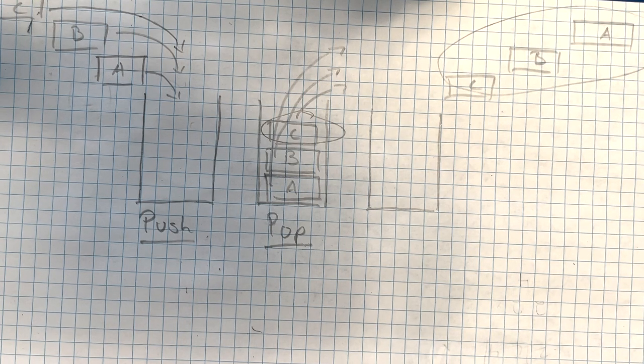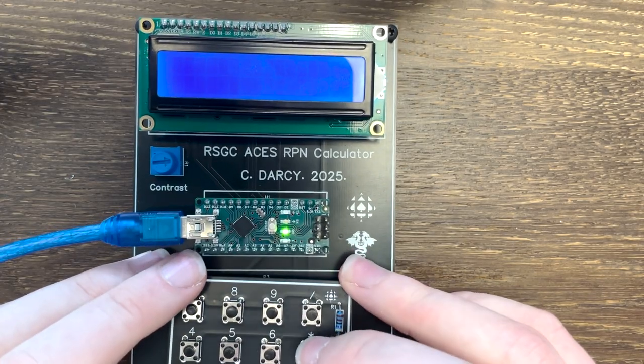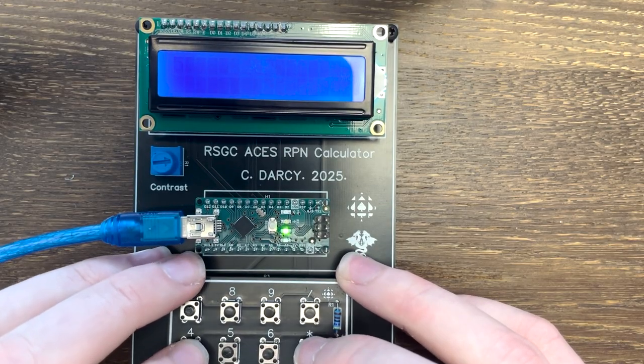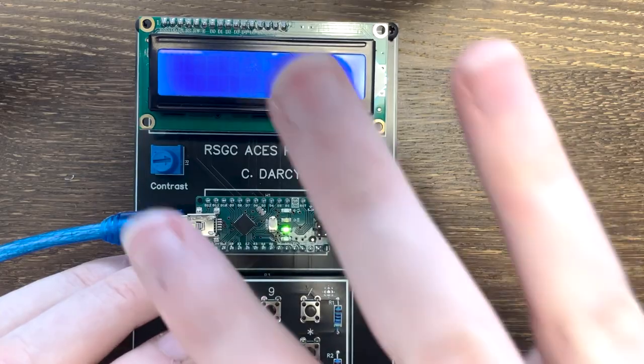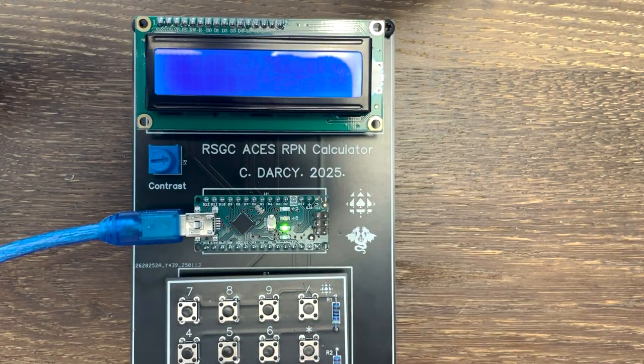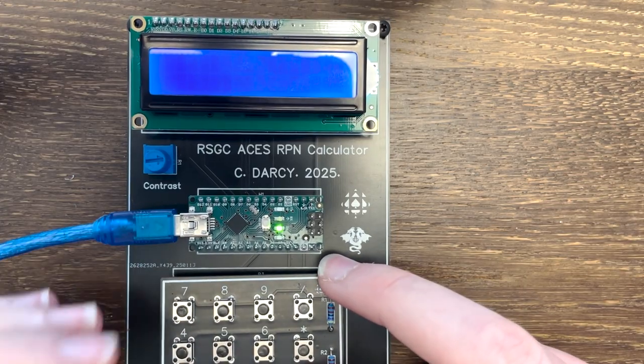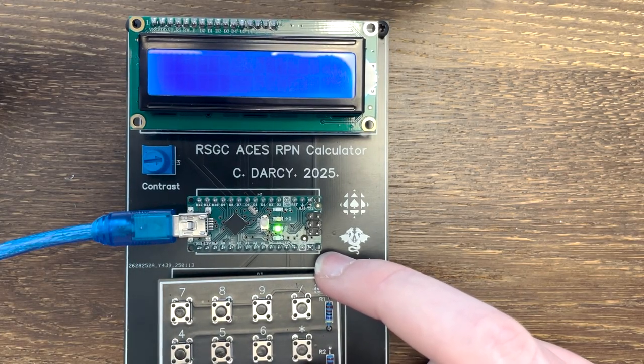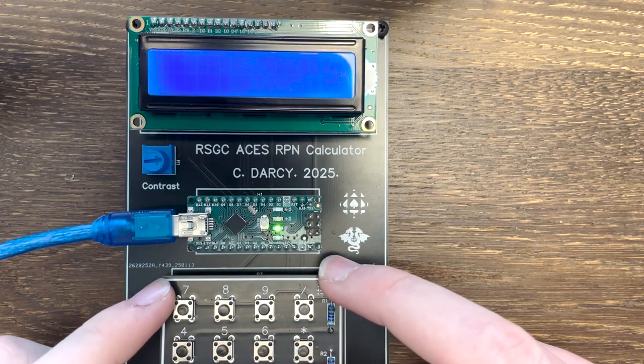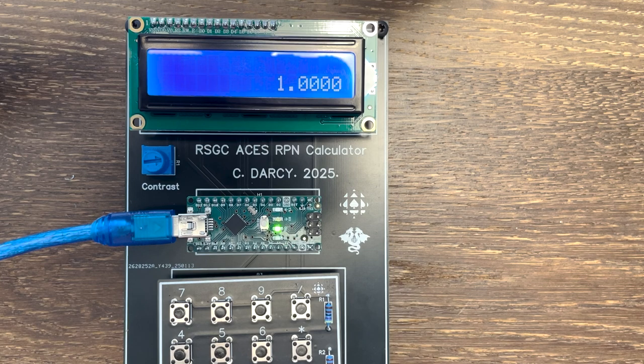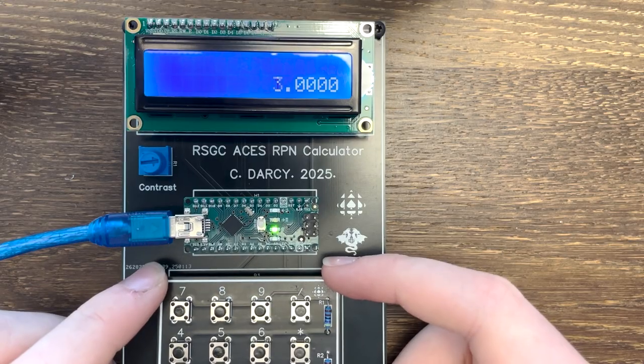So if I do 2, enter, 5, enter, 4, enter, now there are three elements on the stack with 4 being the topmost one. Pressing the minus button will pop the top two off the stack, 5 and 4, resulting in 5 minus 4 equals 1. Pressing plus now will pop the most recent two off the stack again, this time being the new 1 and 2, adding them together for a final result of 3.